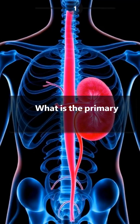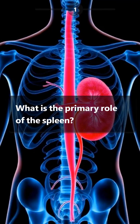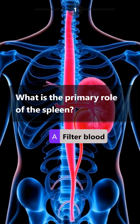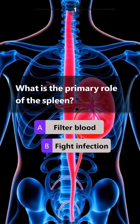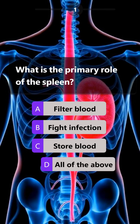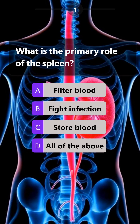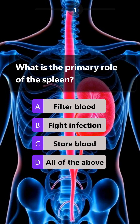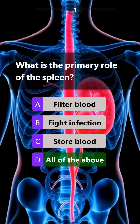What is the primary role of the spleen? Filter blood, fight infection, store blood, all of the above. The answer is all of the above.